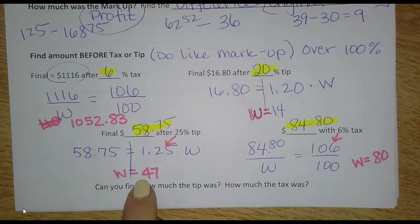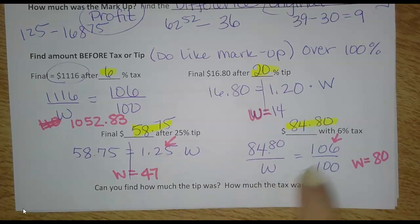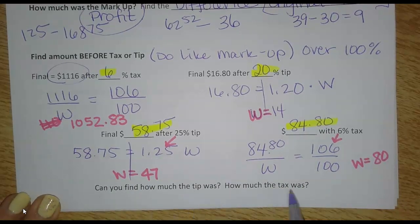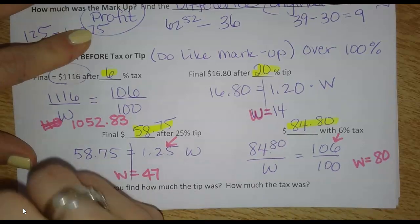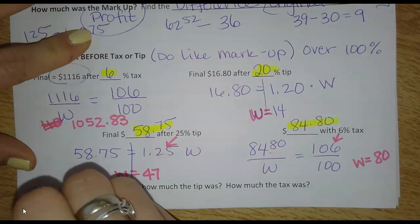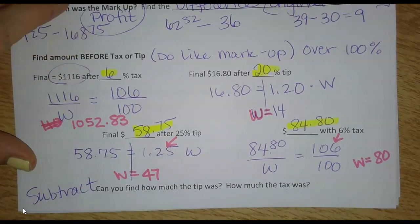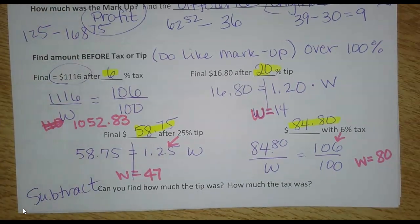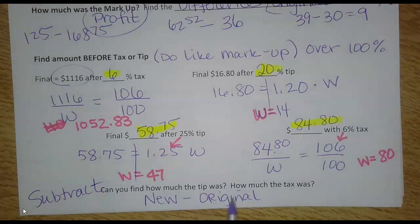So I finished these. Make sure you put in 125%, 106% for your new P. So could you find how much the tip was or how much the tax was? Yes. Again, you're going to subtract. Or just find the difference from the original to the new price to find out how much was tip, how much was tax. So this difference, new minus original, will be the amount of the tip or the amount of the tax. So probably go ahead and do that.